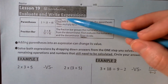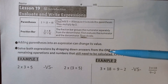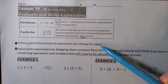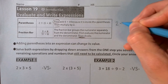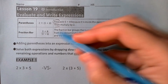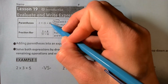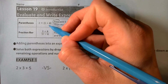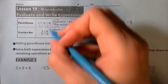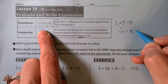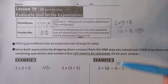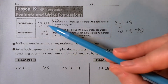Adding parentheses into an expression can change its value. Without parentheses, two times five plus eight gives you ten plus eight, which is 18. But with parentheses around five plus eight, you get 13, and 13 times two equals 26. So 18 versus 26 — if we didn't have those parentheses in that particular spot, it would completely change your answer. The parentheses force us to do the addition first.